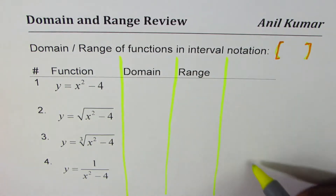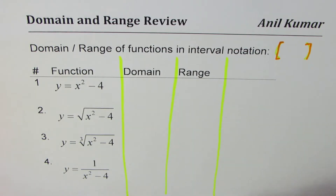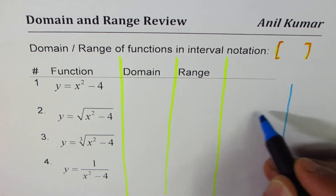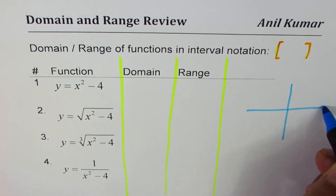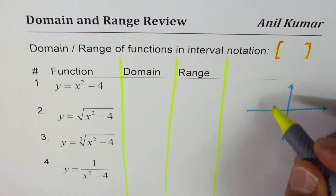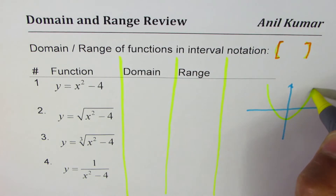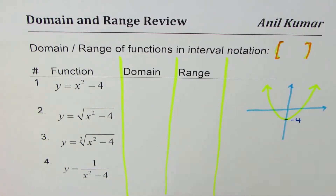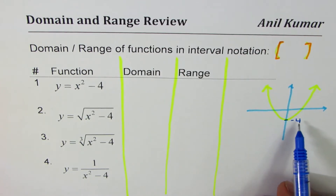I'll use the space to make a rough sketch which will help us find domain and range. You can always pause the video, answer the question, and then look at my solutions. y = x² - 4 is a quadratic function — a parabola which has been translated 4 units down, so the vertex is at (0, -4).